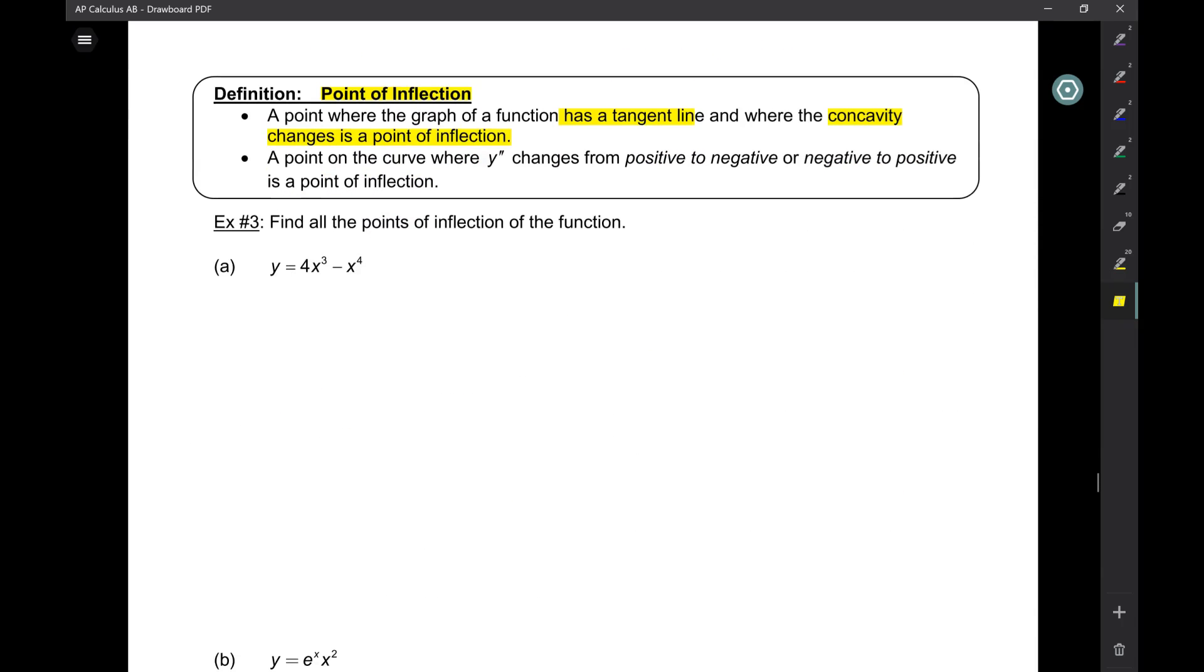All right, so let's find points of inflection here. y prime is 12x squared minus 4x cubed. So, y double prime is 24x minus 12x squared. So, 0 equals, let's factor, 12x, 2 minus x. So, x is 0, x is 2. Number line. When x is a negative number, this is negative, positive, negative. Okay, so we plug this into y double prime. So, concave down, up, down. So, both of those are points of inflection. So, I say, P-O-I, x equals 0, x equals 2.